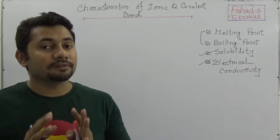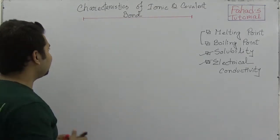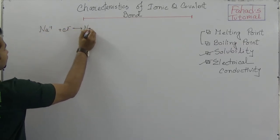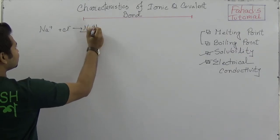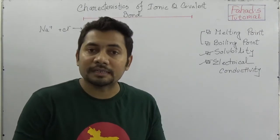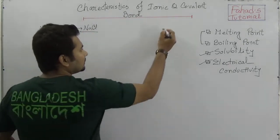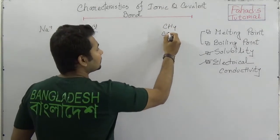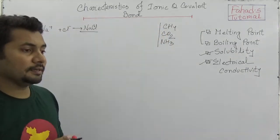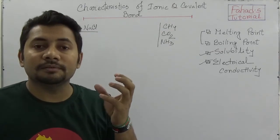If you look at ionic compounds, they form with two different types of ions. For example, sodium chloride forms with cations like sodium plus and chlorine minus. In case of covalent compounds like CH4 (methane), carbon dioxide, and ammonia — these are very common examples of covalent compounds, formed by sharing electrons.